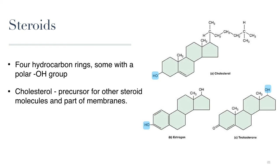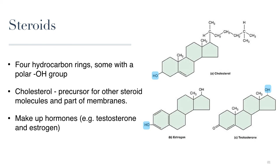All steroids have these four linked carbon rings, and several of them have a hydroxyl functional group attached to one of the rings. Cholesterol is the most common steroid. It is mainly made in the liver and serves as the starting material for many steroid hormones. Cholesterol also serves as the starting material for other important molecules like bile, and it is a key component of cell membranes, playing a role in altering their fluidity and stabilizing them.